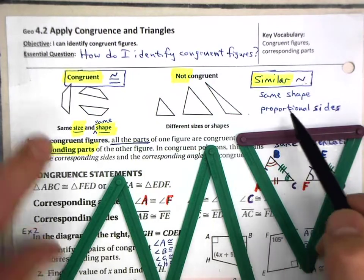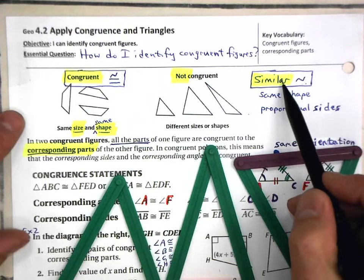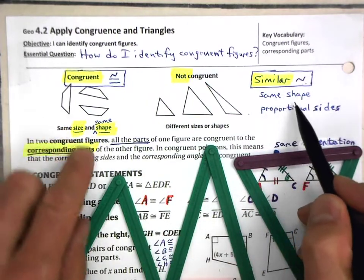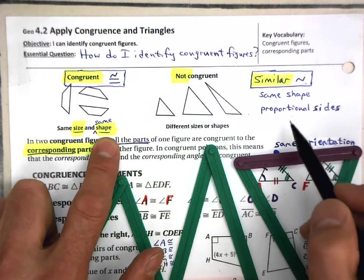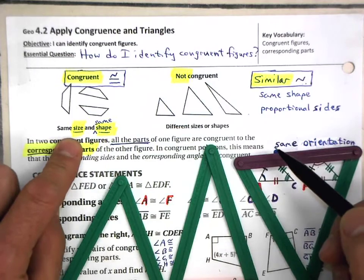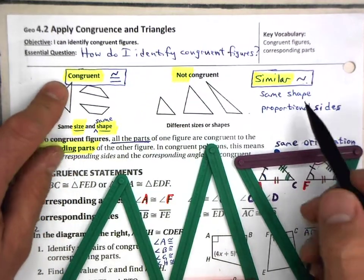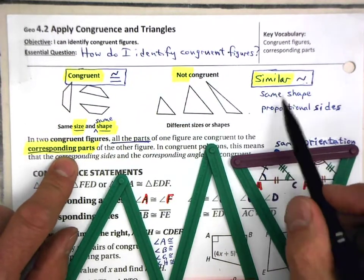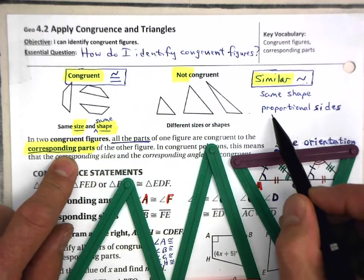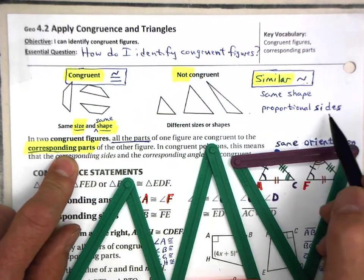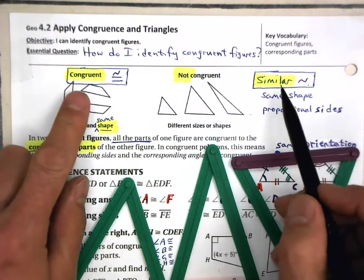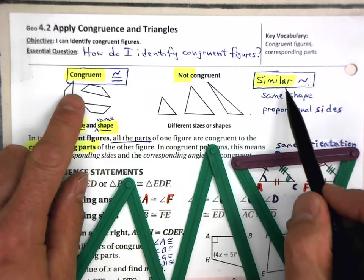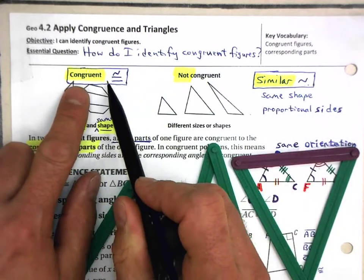The principle for similar shapes is same shape — the same idea as congruence — except instead of being the same size, similar shapes have proportional sides. We've talked about that before and will emphasize it again in the future. I just wanted to connect similar with congruent.